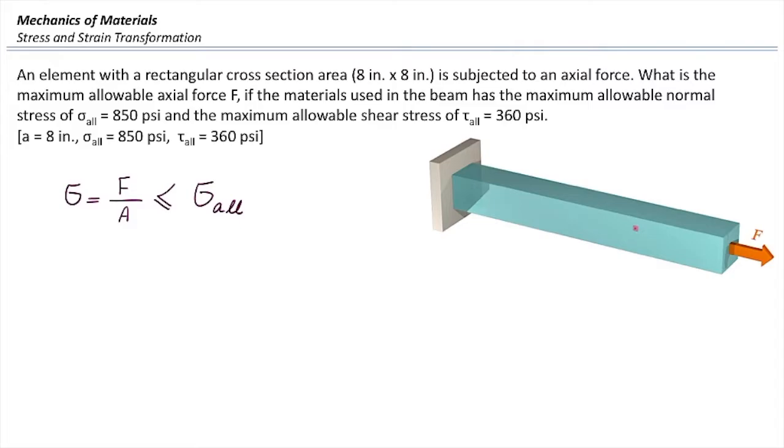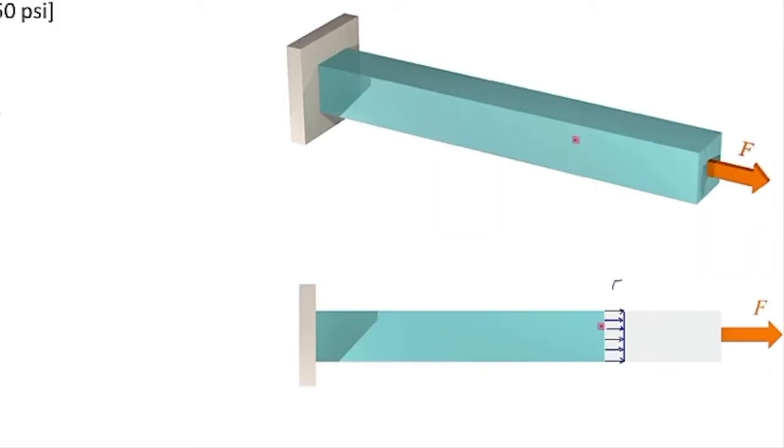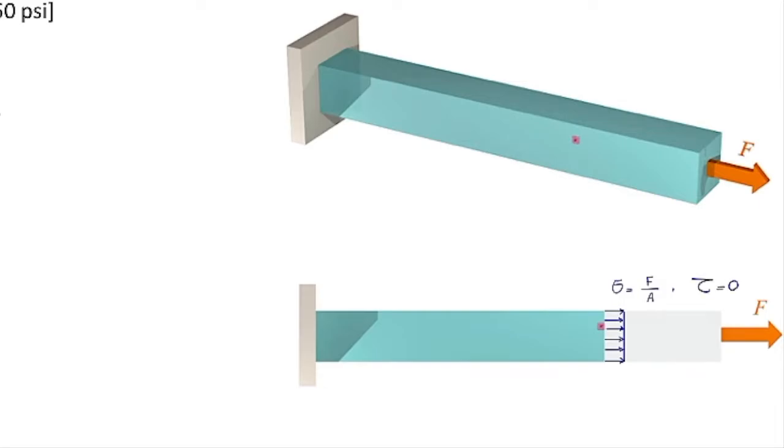In this element, is there any shear stress developed because of that axial force? No. We learned that shear stress is produced by shear force or torsion - just these two. Normal force is not producing shear stress. So let's consider the case that this is made from a material that is strong in normal stress but weak in shear stress.